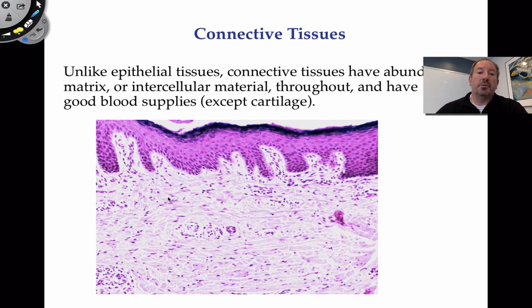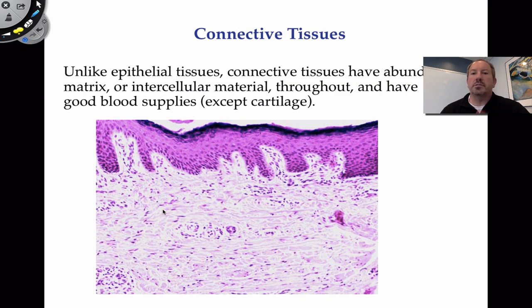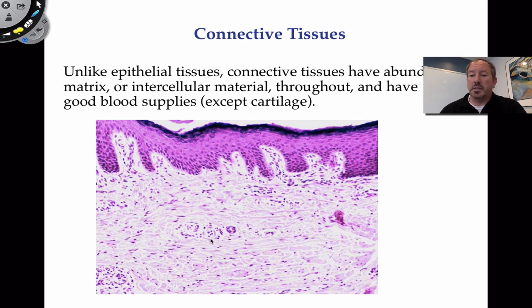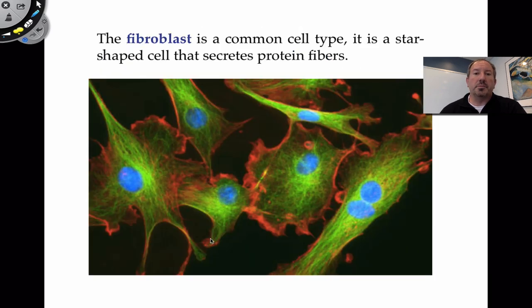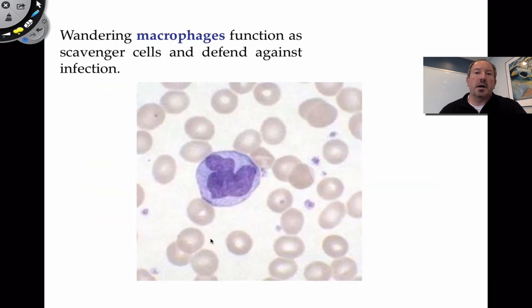These are fibroblast cells in the skin. Everywhere there's not a cell is protein. Your skin has a lot of collagen in it, and it's these fibroblast cells in the dermis that are producing it.